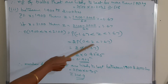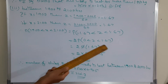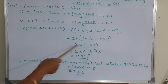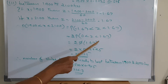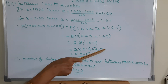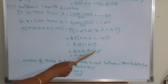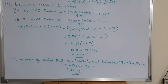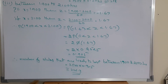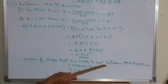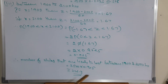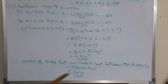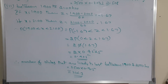So 2 multiplied by P(1.67). From the normal distribution table, looking at row 1.6 and column 7, that value is 0.4525. Multiplying: 2 times 0.4525 gives approximately 0.905. Therefore, the number of bulbs likely to last between 1900 and 2100 hours equals 2500 multiplied by 0.905, giving approximately 2263 bulbs.